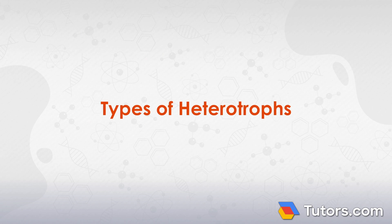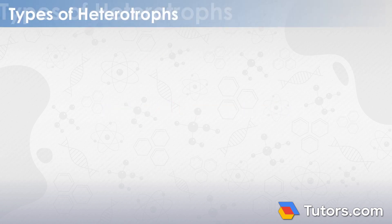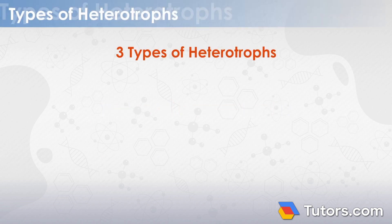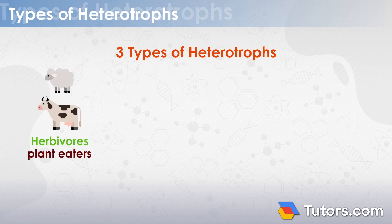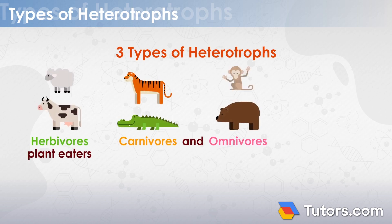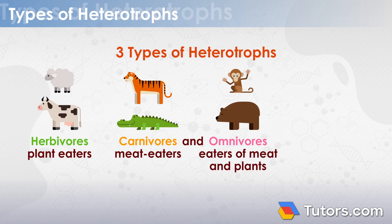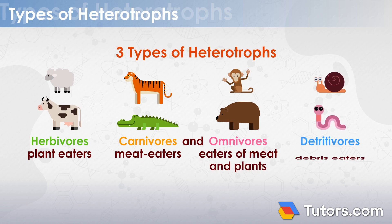Most biologists name three types of heterotrophs: herbivores, plant eaters; carnivores and omnivores, meat eaters and eaters of meat and plants; and detritivores, debris eaters.